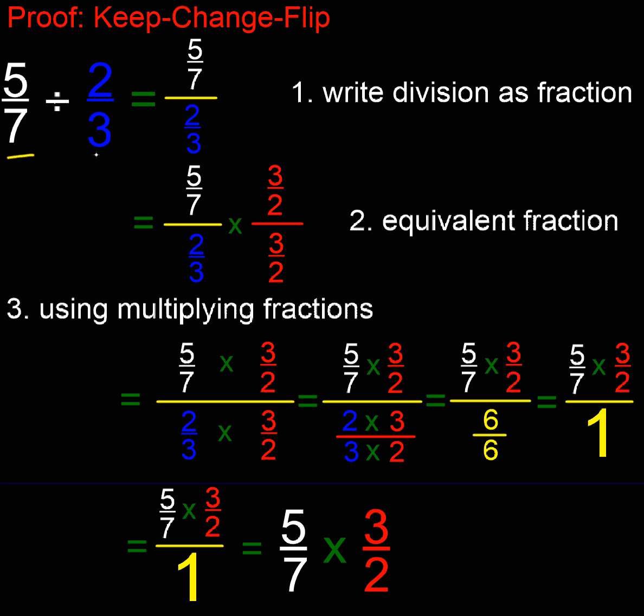I've got 5 sevenths divided by 2 thirds. Now we know that division is the same as writing a fraction, isn't it? So if I just had the 5 and the 2 there, 5 divided by 2 would be 5 over 2, wouldn't it?